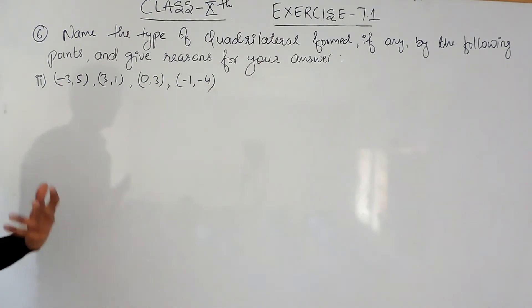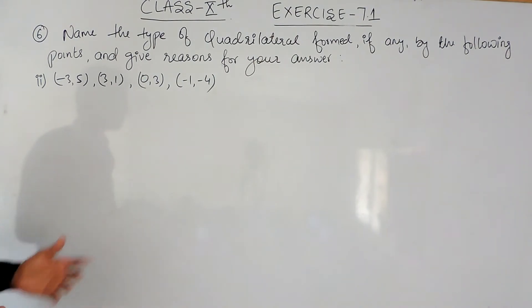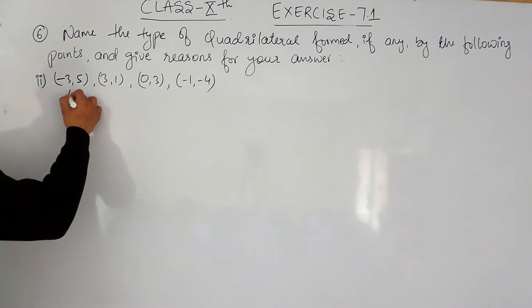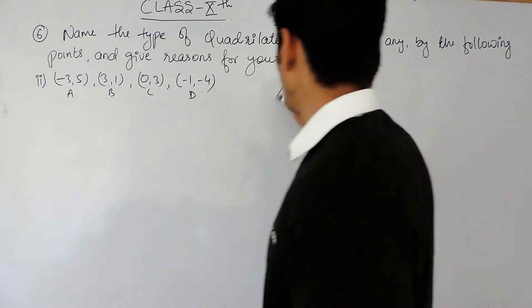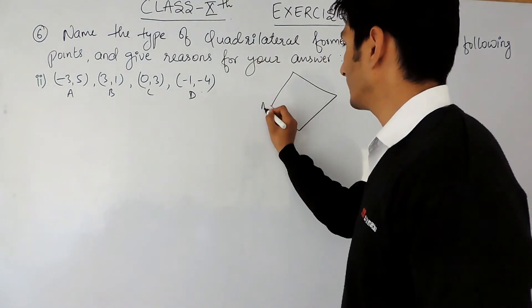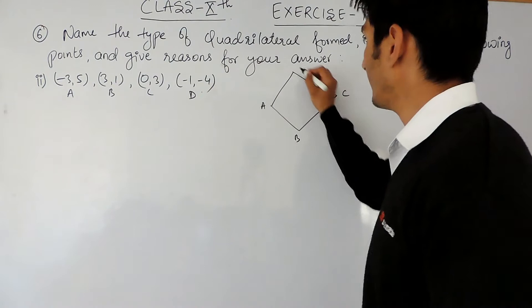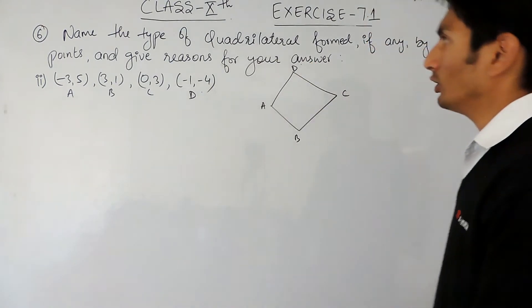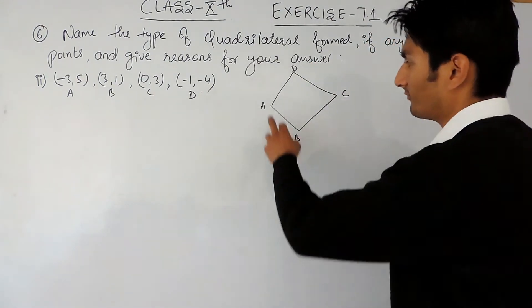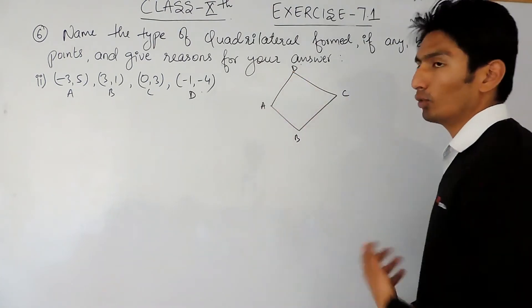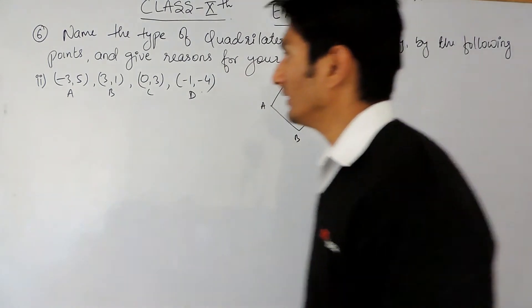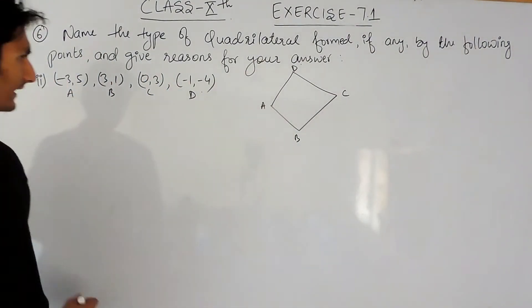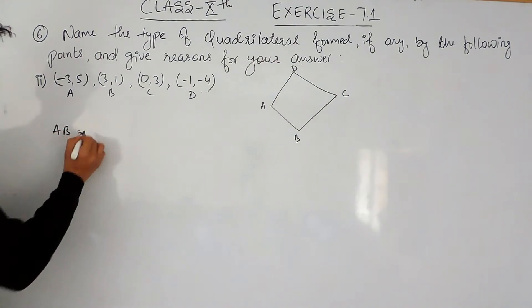Now if I consider these four points as A, B, C, D and join all four points A, B, C, and D, we need to confirm which type of quadrilateral this is. To do that, you have to find the length of all four sides plus the length of the diagonals.